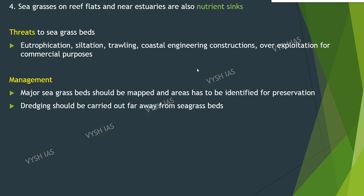They filter nutrients and thus act as nutrient sinks. Threats to sea grass beds include eutrophication (excess nutrient presence in marine water bodies), siltation, trawling, coastal engineering, construction, and over-exploitation for commercial purposes. Management of sea grass beds: Major sea grass beds should be mapped and areas identified for preservation, and dredging should be carried out far away from sea grass beds.